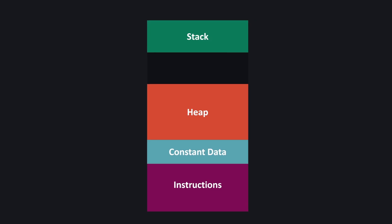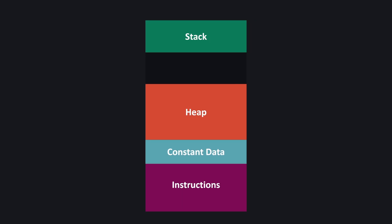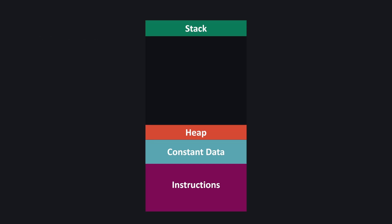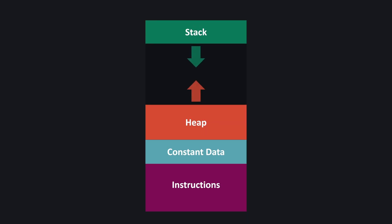One thing to notice about these two regions is that there is a portion of empty space in between them, so that the stack and the heap can grow independently without interfering with one another. Memory is a finite resource, so in general we want our program to use as few resources as it needs. Ideally when your program starts, the stack and the heap will be a small size, growing to accommodate new runtime information as the program runs.